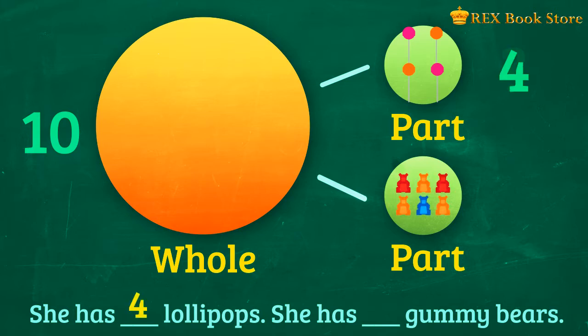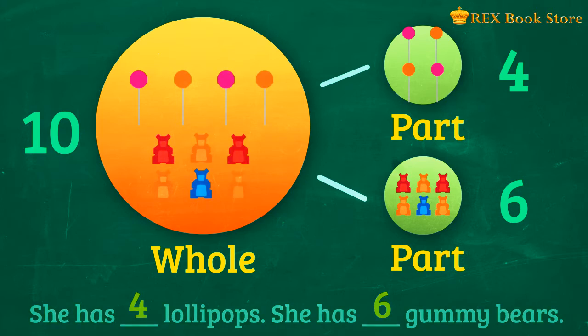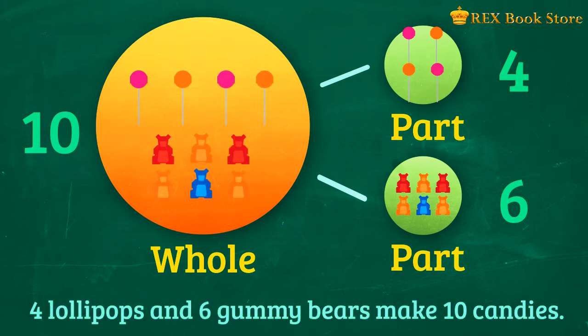She has 4 lollipops. And how many gummy bears does she have? Aimee has 6 gummy bears. So 4 lollipops and 6 gummy bears make 10 pieces of candy.